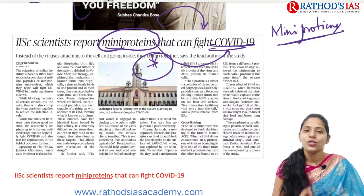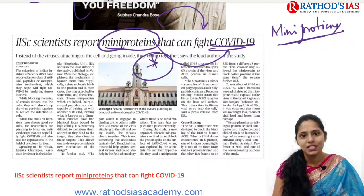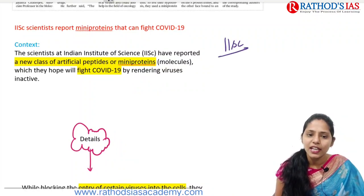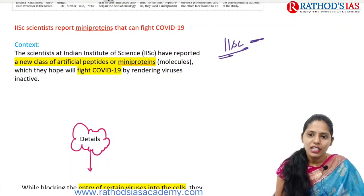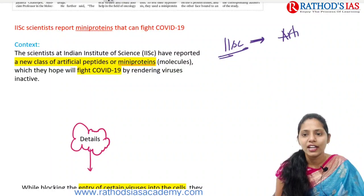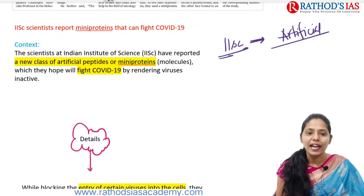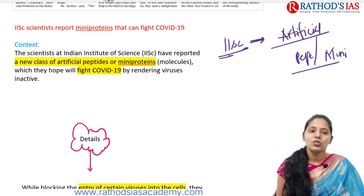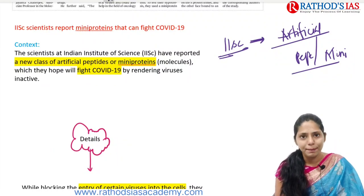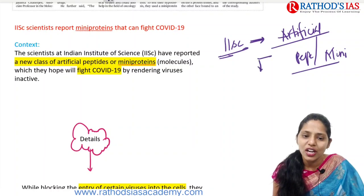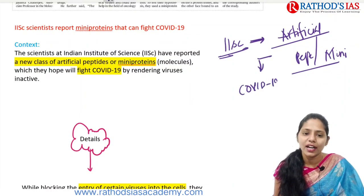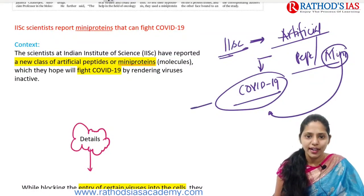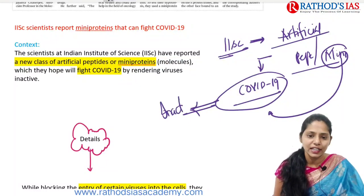In context, it mainly says that scientists from IISC — that is the Indian Institute of Science — reported that a new class of artificial peptides, also called mini proteins, will help to fight against this COVID-19 virus. Whenever we are adding these mini proteins to the COVID-19 virus, the virus becomes inactive.